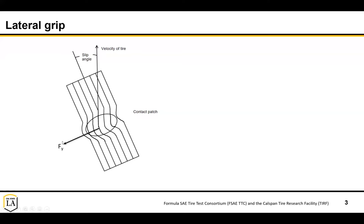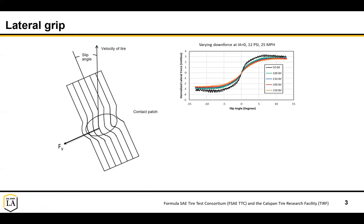This lateral force depends on the downforce on the tires and how hard they're pushing into the ground. For the most basic model, you might just assume a coefficient of friction - the lateral force normalized by the downforce. But when we look at the tire data from the tire test consortium, we can see that this normalized lateral force - kind of like a coefficient of friction - is the lateral force divided by how hard the tire is being pushed down.